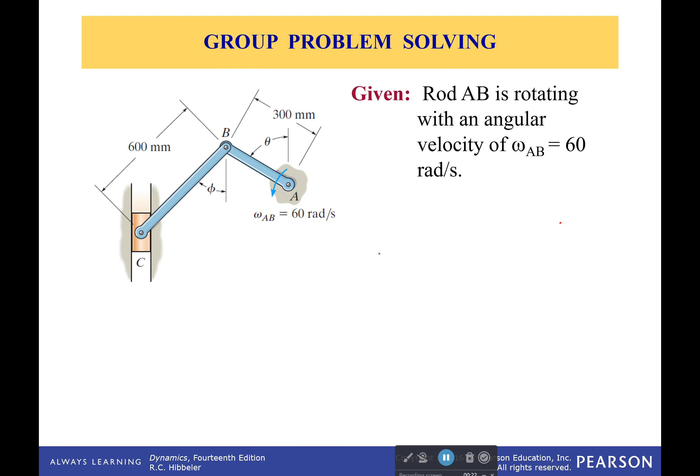So what's the problem I'm asking? Well, we know that rod AB is rotating with angular velocity of 60 radians per second. That's pretty fast. And we want to find the velocity of the slider block C when theta is equal to 60 degrees and phi is equal to 45 degrees.